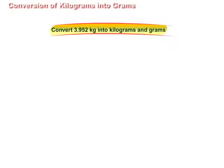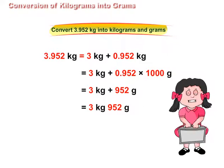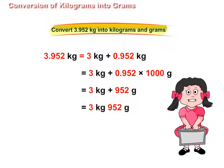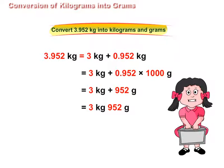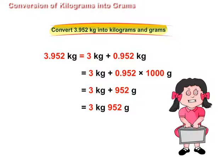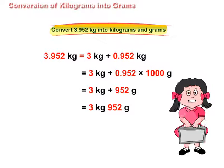Convert 3.952 kilograms into kilograms and grams. To convert 0.952 kilograms into grams, we multiply 0.952 kilograms by 1000, getting 952 grams. Thus, 3.952 kilograms are equal to 3 kilograms, 952 grams.